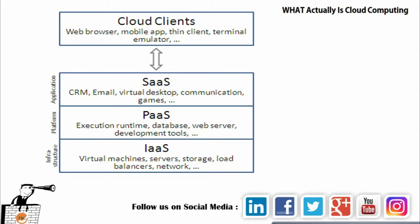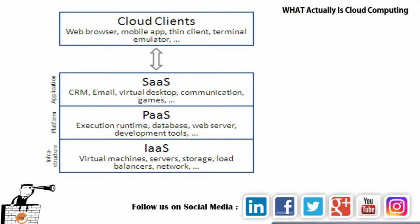Cloud clients include web browsers, mobile apps, thin clients, and terminal emulators. The three service models map to different use cases: SaaS is mostly used for CRM software, email hosting, virtual desktops, communication, and games. PaaS is used for execution runtime, databases, web servers, and development tools. IaaS is used for virtual machines, servers, storage, load balancers, and networking.